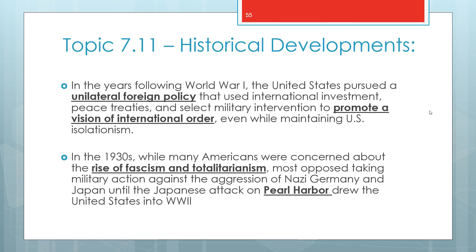To summarize the interwar period: the US pursued a unilateral foreign policy promoting international order while practicing isolationism, and most Americans opposed military involvement until Pearl Harbor. For the exam, know the progression from disengagement to neutrality to engagement — especially the Neutrality Acts, Cash and Carry, Lend-Lease, and the Four Freedoms Speech. The next video will cover the home front mobilization and military actions of WWII, followed by a third video on post-war diplomacy and the beginning of the Cold War.